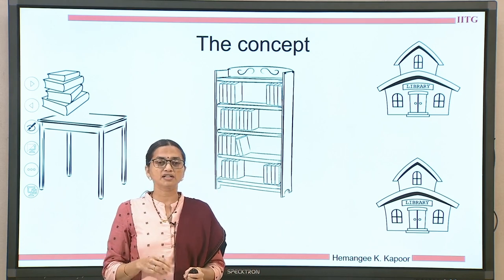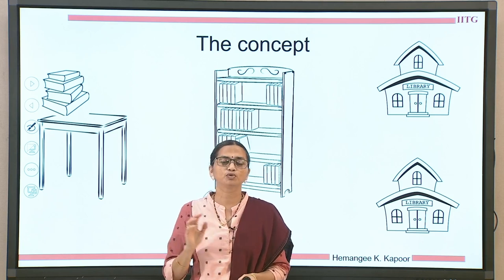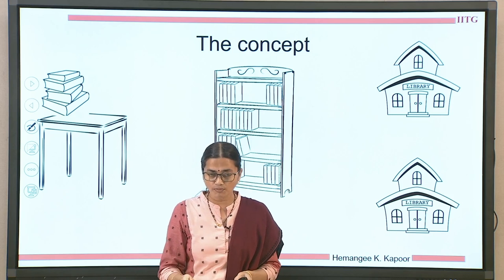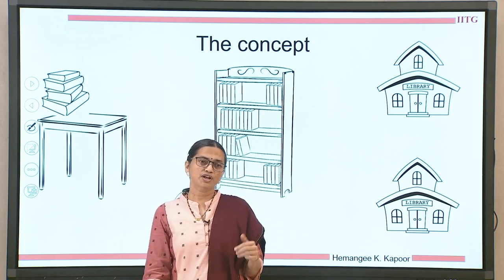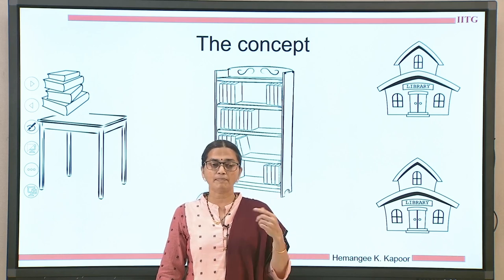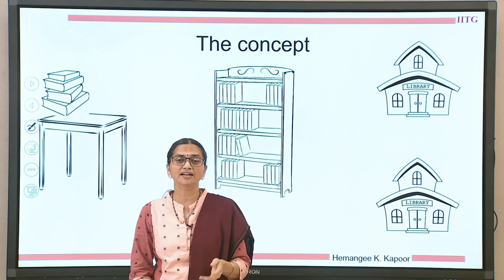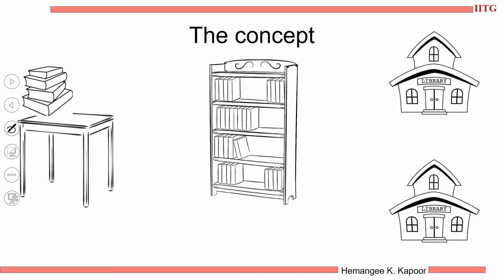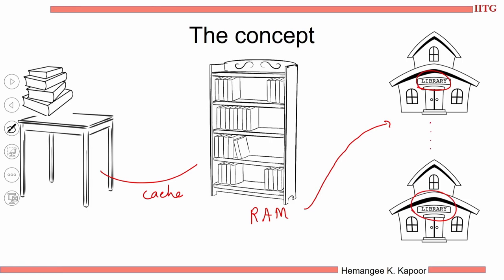Now your term paper demands more books and your library does not support those books. So you want to access more books which are not in your library, and therefore you take special permissions and visit libraries apart from your own college or institute. You will visit other libraries to bring books. You are bringing books from the shelf to your desk, and when your main memory — the shelf — falls short, you want to go elsewhere to other libraries in town or another town.